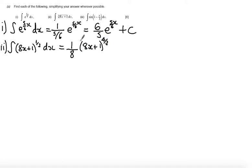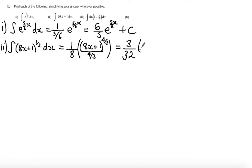Raising the power by 1 gives 4 over 3, because I've added 1 to the fraction. Then I divide by this new power of 4 over 3. Tidying up, I flip the fraction and multiply, getting 3 on top and 4 times 8 equals 32 on the bottom, giving 3 over 32 times 8x plus 1 to the power of 4 thirds, plus the constant of integration.